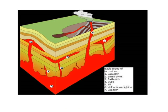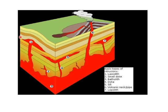Just to revise some of the igneous features that we did in Grade 10: today we are looking at laccoliths, lopoliths, and batholiths, and what happens to them when the surface erodes. We should note that the laccolith is responsible for doming.